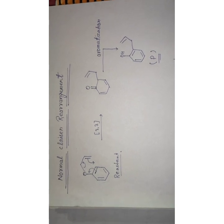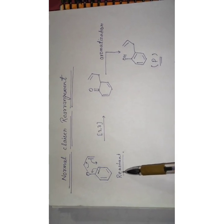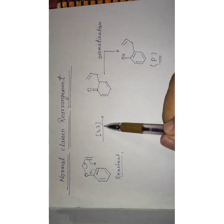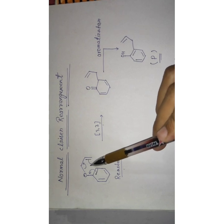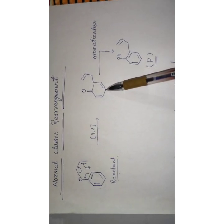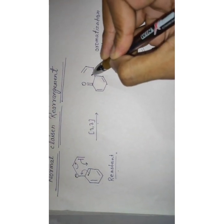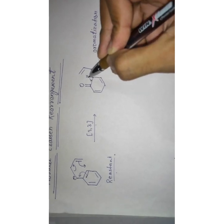Welcome to my YouTube channel. Now we come to normal Claisen rearrangement. The most common example for this reaction is the 3,3-sigmatropic rearrangement. Here we form the product, and after aromatization our final product is obtained. This is how normal Claisen rearrangement works — a sigmatropic rearrangement takes place.